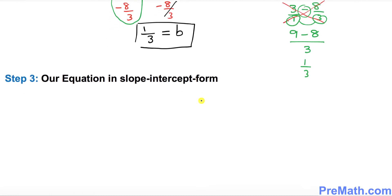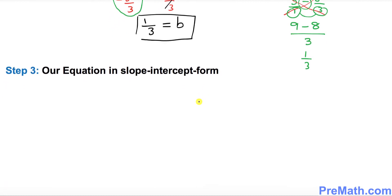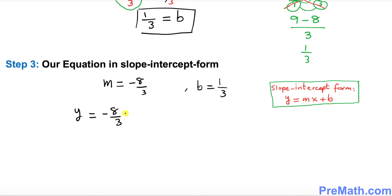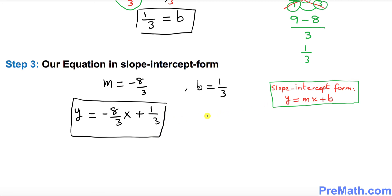The final step is to write our equation in slope-intercept form: y equals mx plus b. We know m equals negative 8/3 and b equals 1/3. Filling in the blanks: y equals negative 8/3 x plus 1/3. That is our answer in slope-intercept form. Thanks for watching, and please subscribe to my channel for more exciting videos.